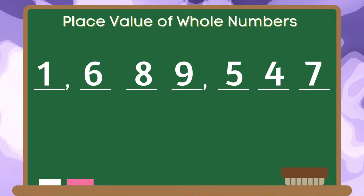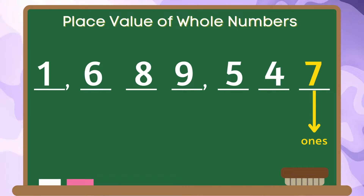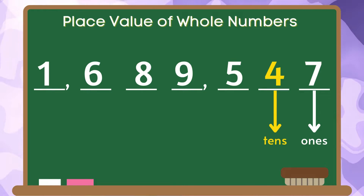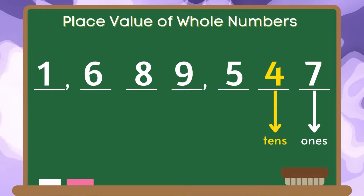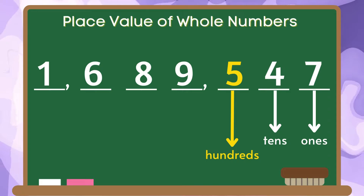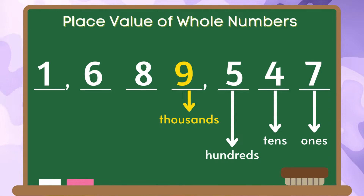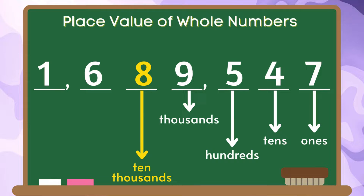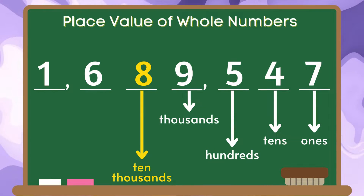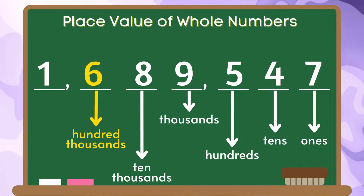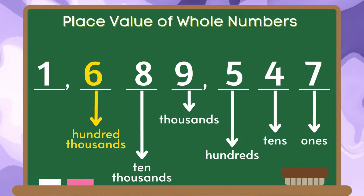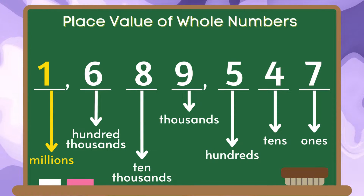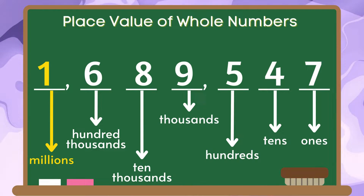The place value of the digit 7 is ones. The place value of the digit 4 is tens. The place value of the digit 5 is hundreds. The place value of the digit 9 is thousands. The place value of the digit 8 is ten thousands. The place value of the digit 6 is hundred thousands. Lastly, the place value of the digit 1 is millions. Therefore, we can say that the highest place value in this number is millions.